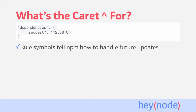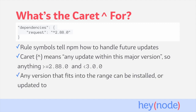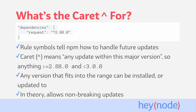The caret, and other characters, are rule symbols which indicate to NPM how to handle future package updates. The caret, which you can see before the 2 in the version number here, specifies that any version from 2.88 or later within this major version will satisfy this dependency — so any version greater than or equal to 2.88.0 but less than 3.0.0. Any version of the package which fits into this range can be used to satisfy this dependency, allowing us to safely update to versions which will be backwards compatible.